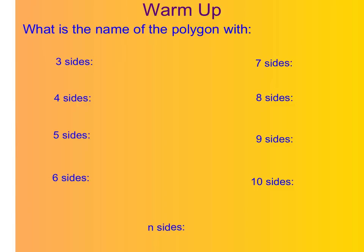If I have a polygon with three sides, it's called a triangle. If I have a polygon with four sides, it's called a quadrilateral. If you said square or rectangle, you're absolutely correct — however, those have a special name. They're all quadrilaterals. We have a lot of different types of quadrilaterals and we're going to be looking at those in this chapter.